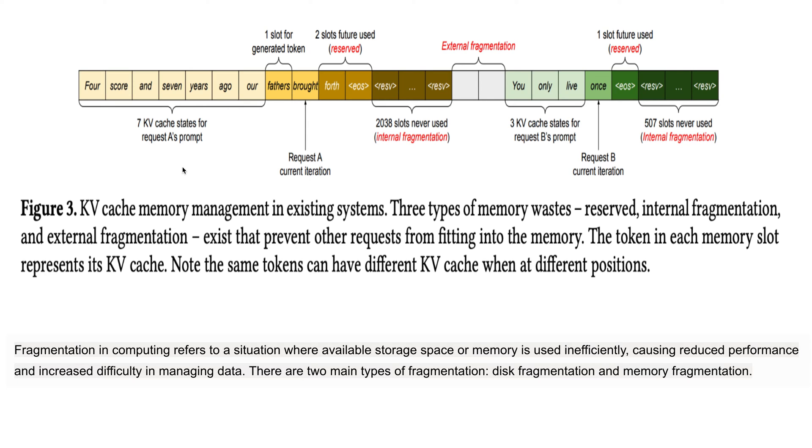If you've given a request to the model, let's say 2048 is the maximum length that the Llama model can produce. This 2048 will be reserved by that particular model. This is the current state, this is the generated slot, and let's say two slots for future, but these 2038 slots are never used. Just imagine this much space was never used. Similarly here, this is another part of the GPU memory - this has been reserved, this is current iteration, this is for future - these many slots are again never used, it's getting wasted.